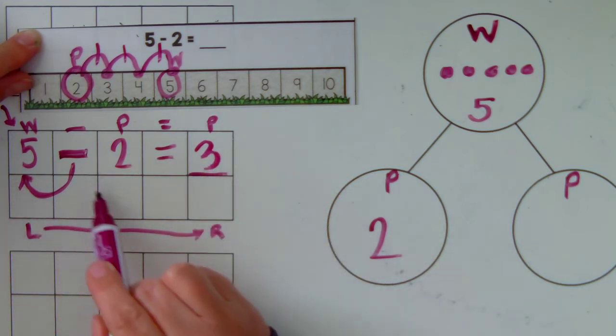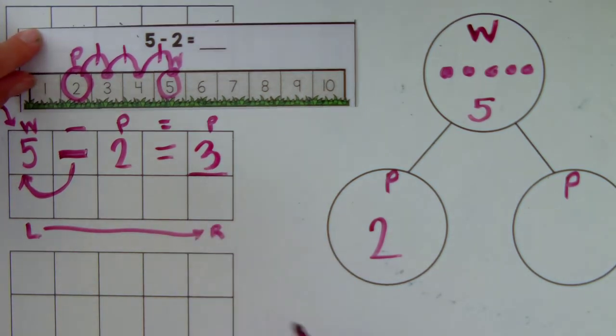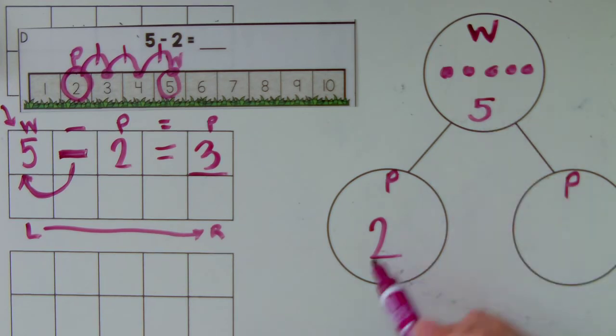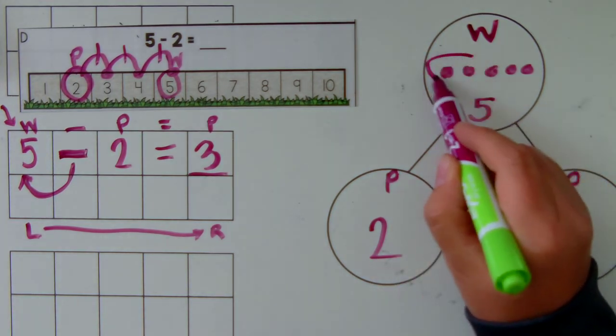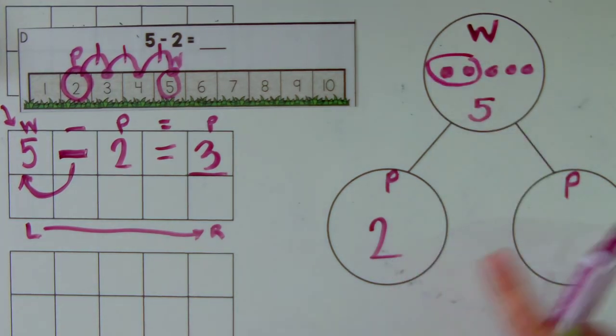5 take away 2 equals 3. If 5 is my whole and 2 is the part, how many are left here for the other part?